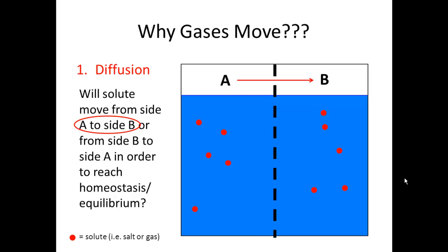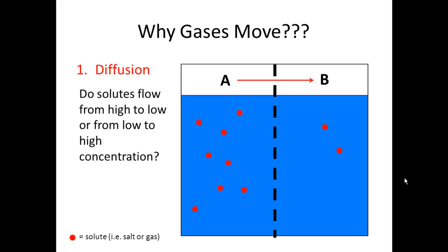Now, number isn't important here, it's just relative amount. What's really going on is they're always going back and forth, trying to keep the concentrations even on each side. So another question: do solutes flow from high to low or from low to high concentration? Well, look at it. Which side has a higher concentration? Which side has more solutes, more gases, or more salt? Side A. So it's going to flow from high to low, which is from side A to side B.